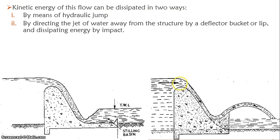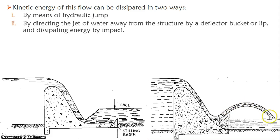If the water is directed away from the structure using a deflected bucket, the damage will not affect the structure. The water falls into the bucket profile, which forms a reverse curve — a bucket or ski-jump shape. The water is then discharged into the air and falls into the downstream channel, which increases the energy dissipation.